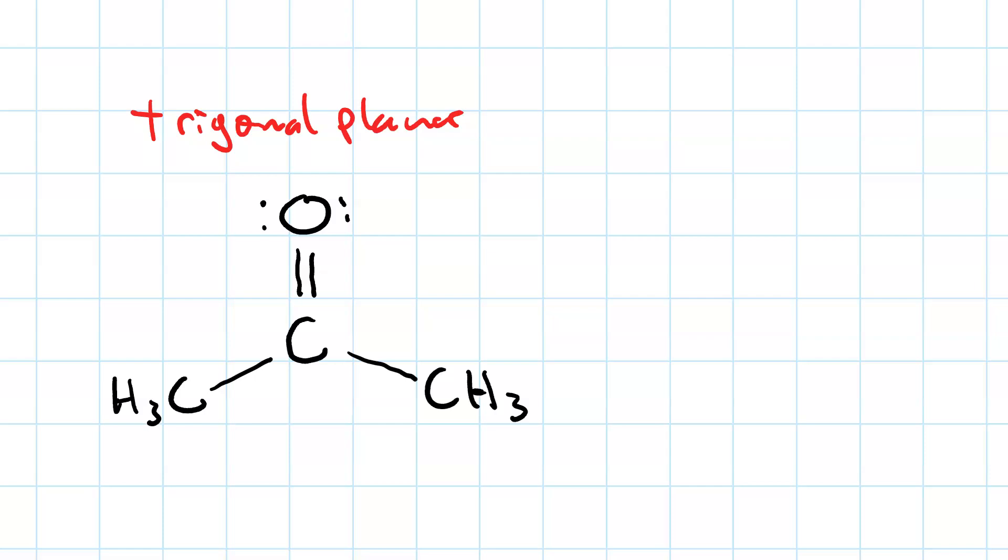The electronegativity of a carbon atom is 2.5. The electronegativity of oxygen is 3.5. That means this bond is very polar.